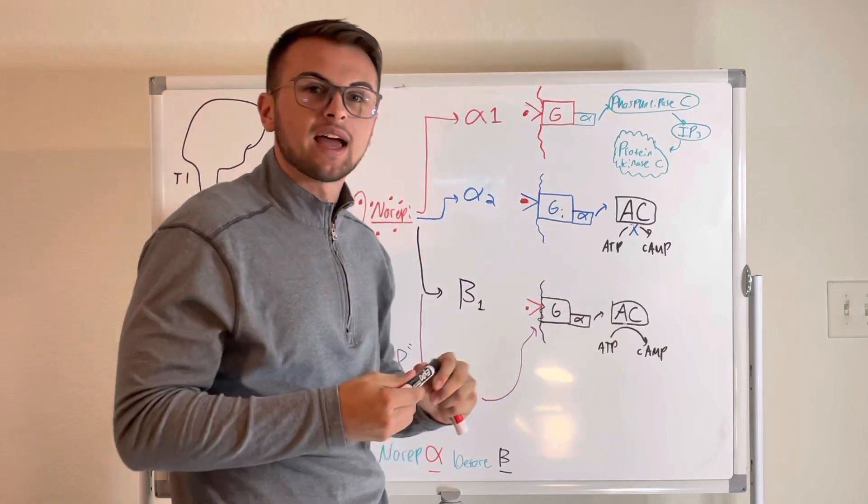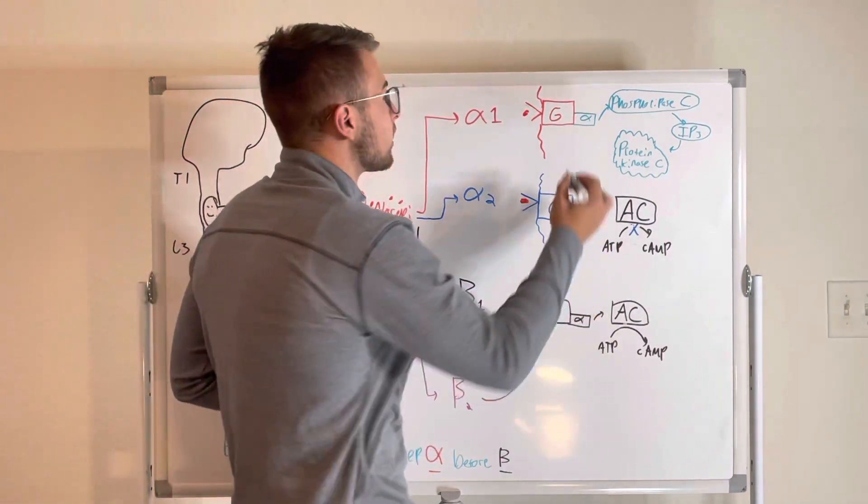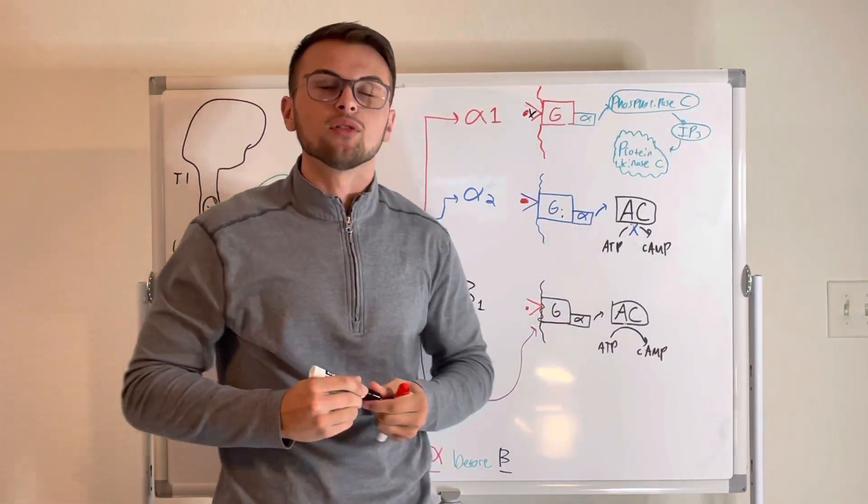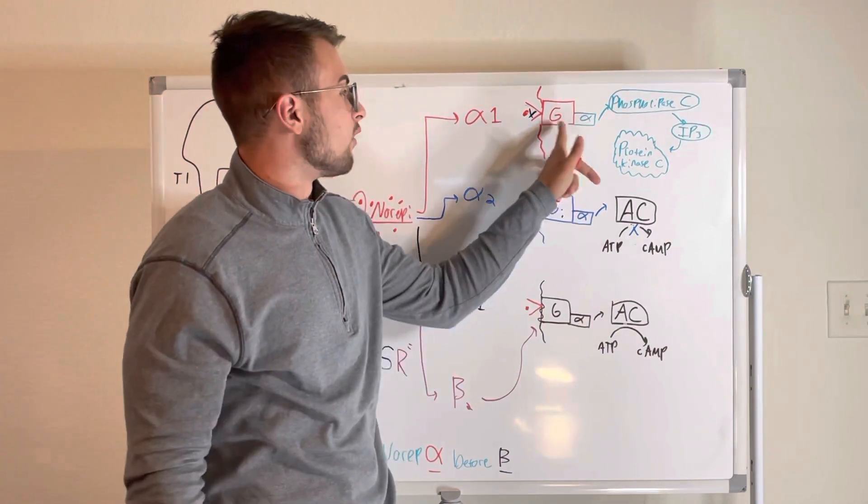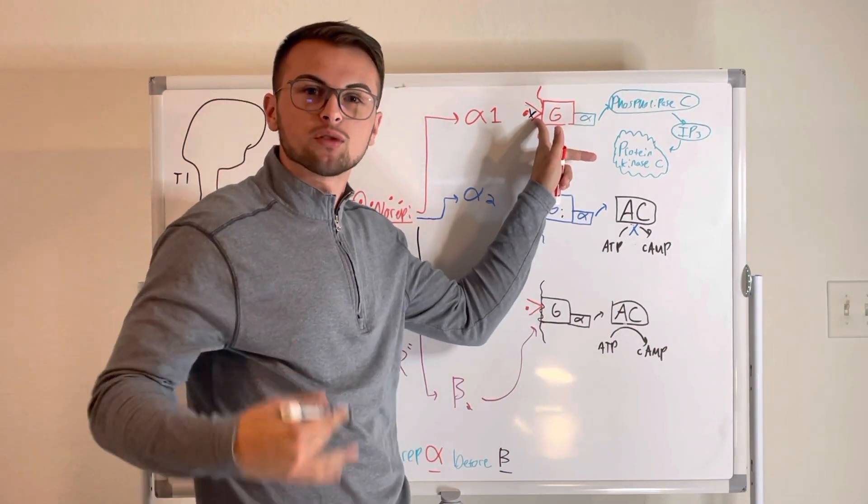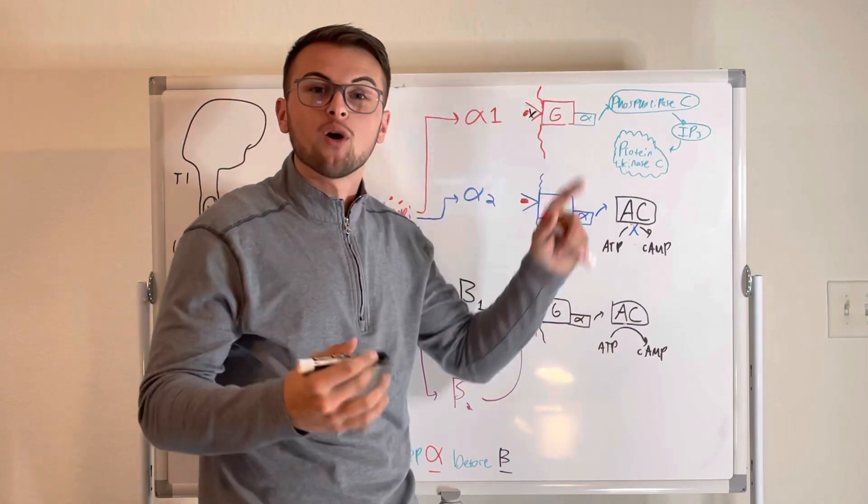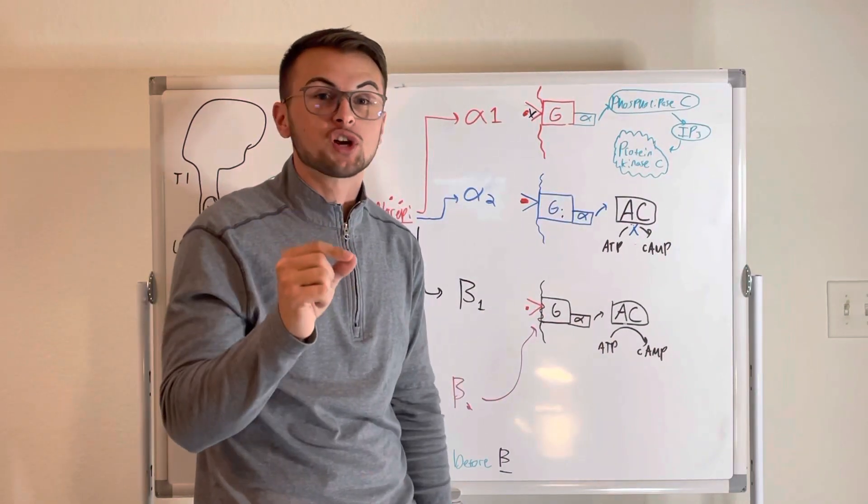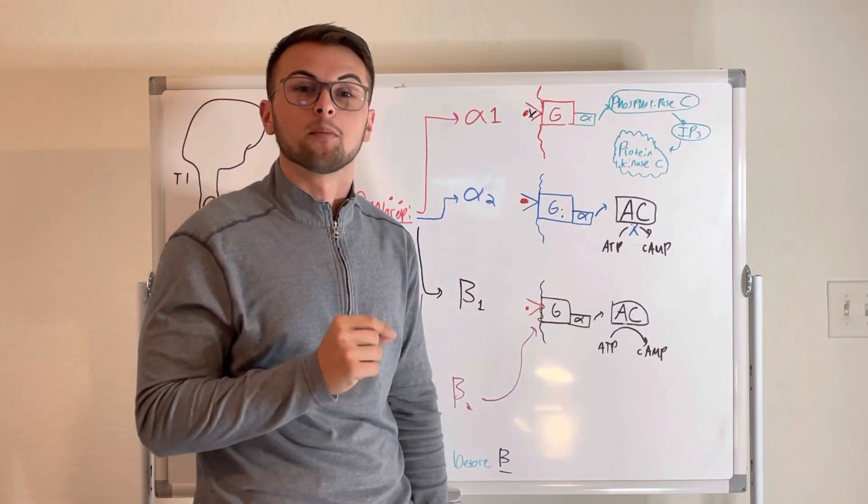Now, what if we gave our patient a drug like prazosin or hydralazine? Now, these drugs block our alpha-1 receptors. So what will be the result? Well, now we know that we would block the constriction of our blood vessels and lower our patient's blood pressure.